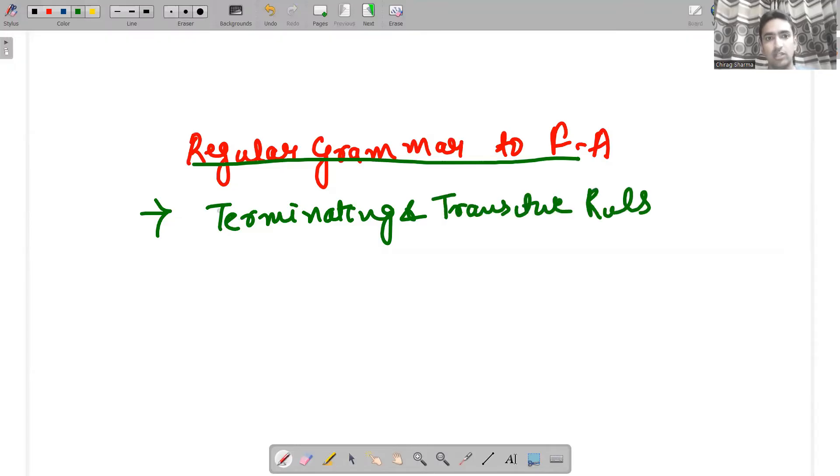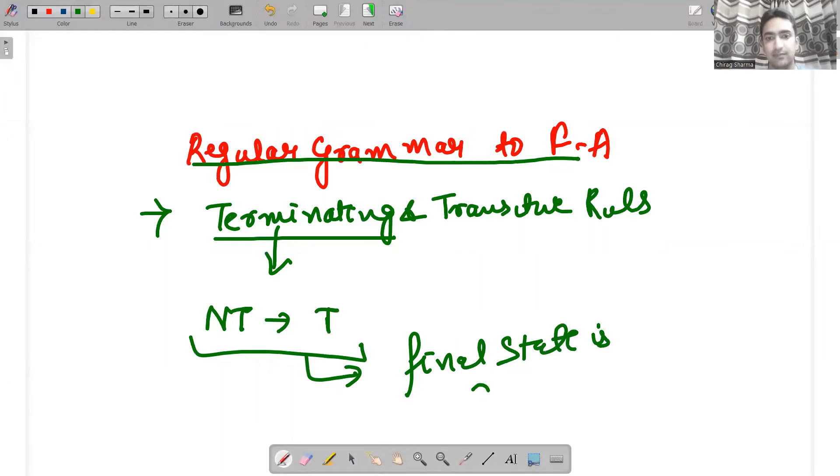If there is no terminating rule, it will not be accepted. If it's not accepted, it means it will be recursive. We need to make sure that the grammar terminates. What is a terminating rule? It means any non-terminal given a terminal so that a final state is reached. This is very important - any non-terminal given a single terminal so that a final state is reached. This is how you construct regular grammar to finite automata. This rule must be present.